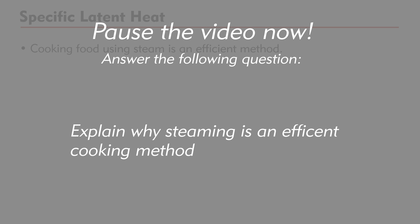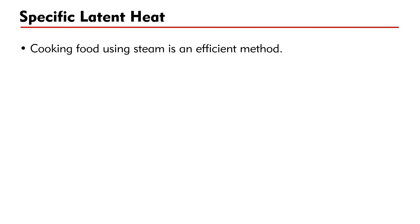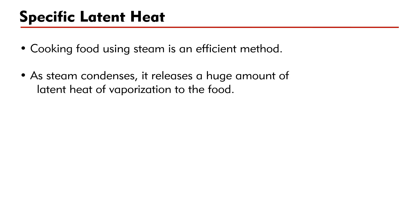Can you explain why steaming is an efficient cooking method? Pause the video and write down your answer. In steaming food, the food is placed inside a chamber of steam. As steam condenses, it releases a huge amount of latent heat of vaporization to the food. Therefore, cooking by steaming is efficient.